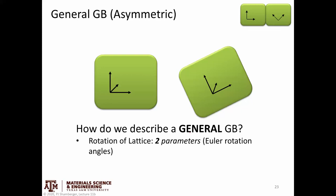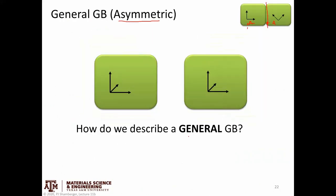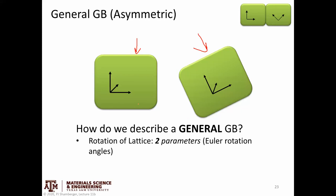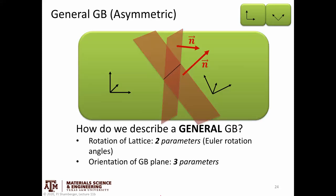What do we need to describe a general grain boundary? I need two parameters to describe the rotation of a lattice on one side of the boundary with respect to the lattice on the other side — essentially our Euler rotation angles. But all that describes is how the lattice is oriented relative to the other side; we haven't said anything about the nature of the interface yet. In addition, I would need parameters to describe the orientation of that interface — specifically, three parameters to describe the normal to the grain boundary surface.